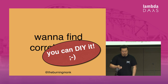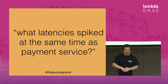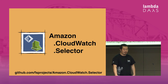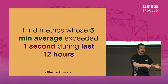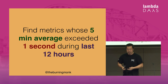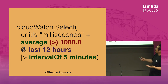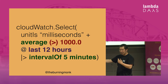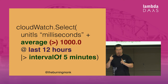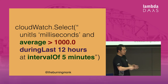This renders a routine post-mortem investigation into quite an exercise of finding a needle in a haystack. Driven by anger, I decided to write a simple DSL which allows me to write queries — for example, to find metrics whose five-minute average was longer than one second at any time in the last 12 hours. I can now express it as a query using the internal DSL, which is fairly human-readable: unit is millisecond and average is greater than 1000 over the last 12 hours at an interval of five minutes. Or I can use the external DSL and express it in a similar way.